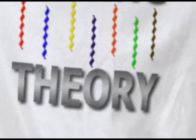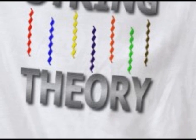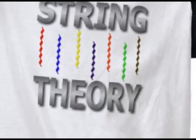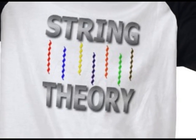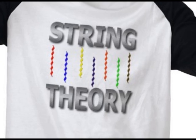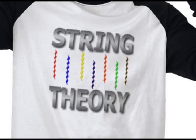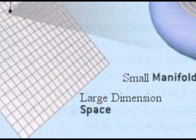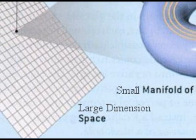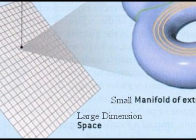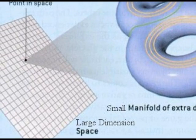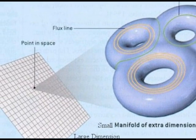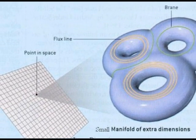The most popular quantum gravity model is string theory. It is popular because some theoretical physicists like the mathematical elegance of the theory. String theory holds that matter and energy are made up of oscillating strings. String theory also entails branes and many extra dimensions.